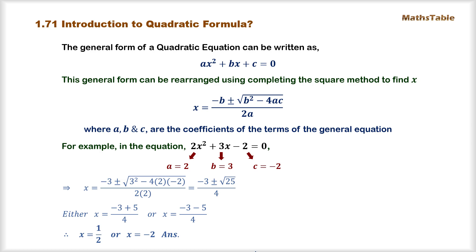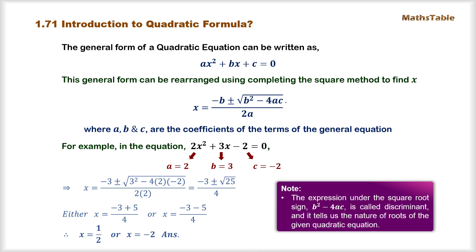Now, one important thing to note is that the expression written under the square root sign, b² minus 4ac, is known as the discriminant of the formula. It tells us the nature of roots, or the type of solutions we can obtain by solving a quadratic equation — whether we obtain two different solutions, one solution, or no solution at all. We are going to discuss this discriminant in much more detail in the following section.